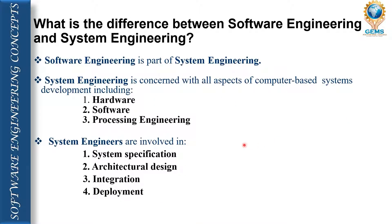Now the difference between software engineering and system engineering. Software engineering is a part of system engineering. System engineering concerns all aspects of a computer-based system including hardware, software, and processing engineering. System engineering involves certain fields: system specification, architectural design, integration, and deployment. These are the areas where system engineers are involved.